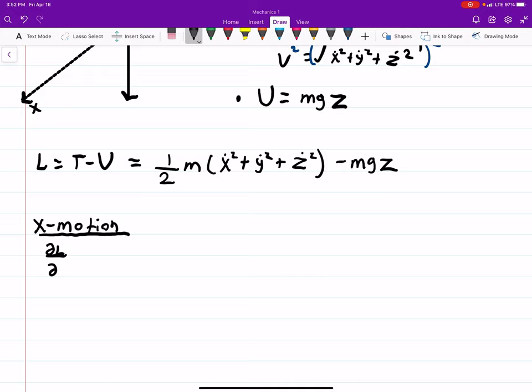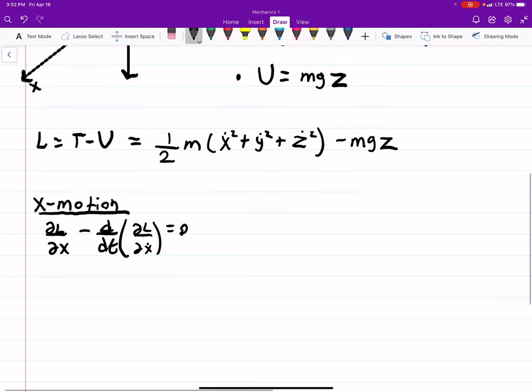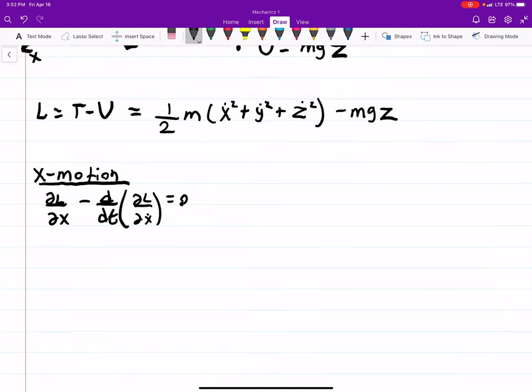So we say DL by DX minus D by DT, DL DX-dot is equal to zero. So we have to look at our Lagrangian, and if we take the derivative of our Lagrangian with respect to X, there is nothing with respect to X. This is X-dot, which is different. So that's zero minus D by DT. So this will be two times one-half, so that goes away. And times X-dot equals zero. Right? By the power rule, this comes down.